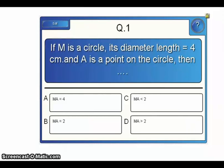First question — choose the correct answer. If M is a circle whose diameter length equals 4 cm, and A is a point on the circle, then: letter A: MA equals 4 cm; letter B: MA equals 2 cm; letter C: MA less than 2 cm; letter D: MA more than 2 cm.